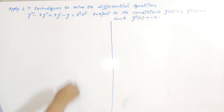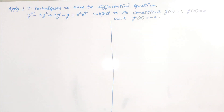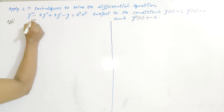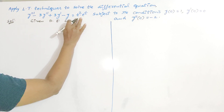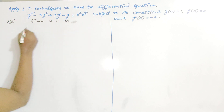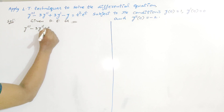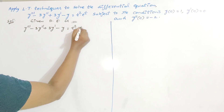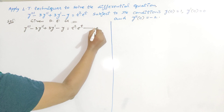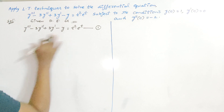We observe that the given differential equation is a third-order differential equation. Please write the given differential equation: y triple dash minus 3y double dash plus 3y dash minus y equals t squared times e to the power t. This is one of the important examples in higher engineering mathematics textbooks, so it is very, very important.